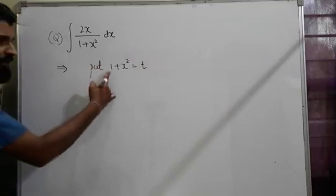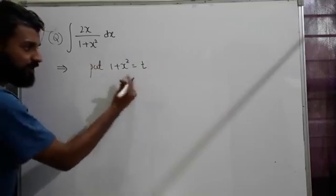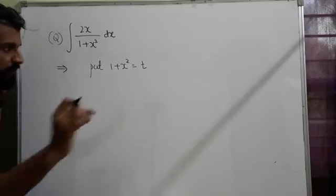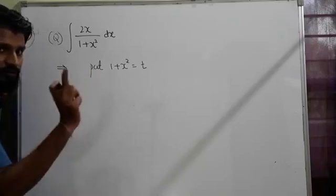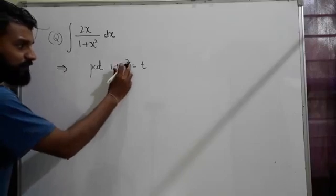Very good. Many of you got it. What should we substitute? The denominator - put 1 + x² = t. OK? So differentiating with respect to t: 1 is zero, constant.